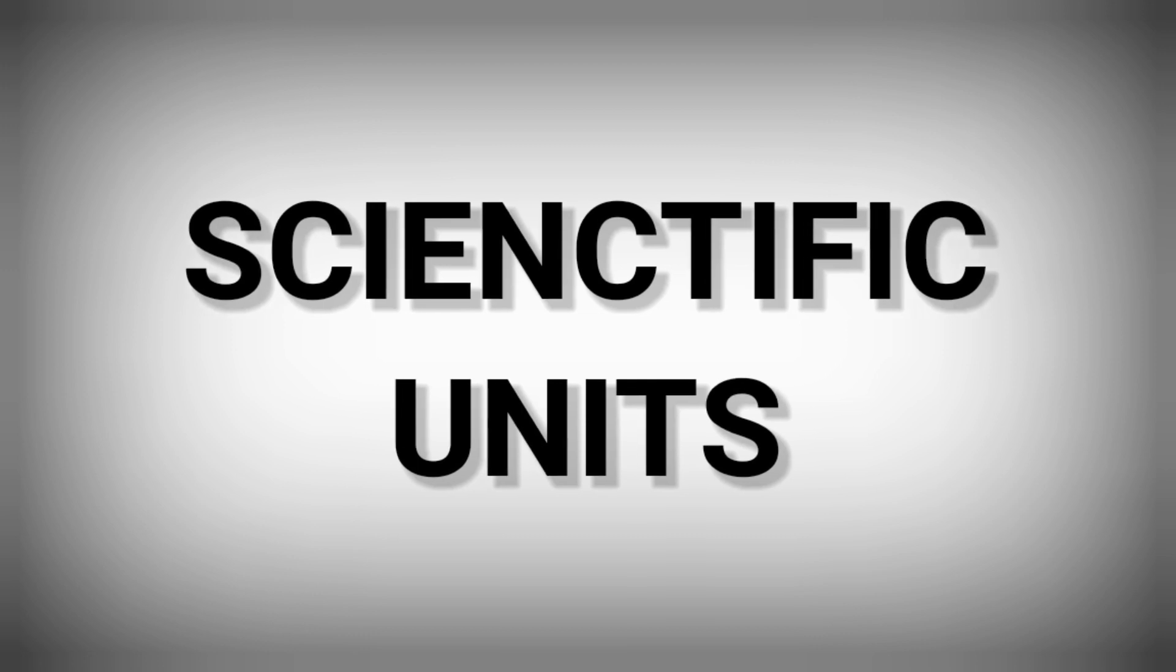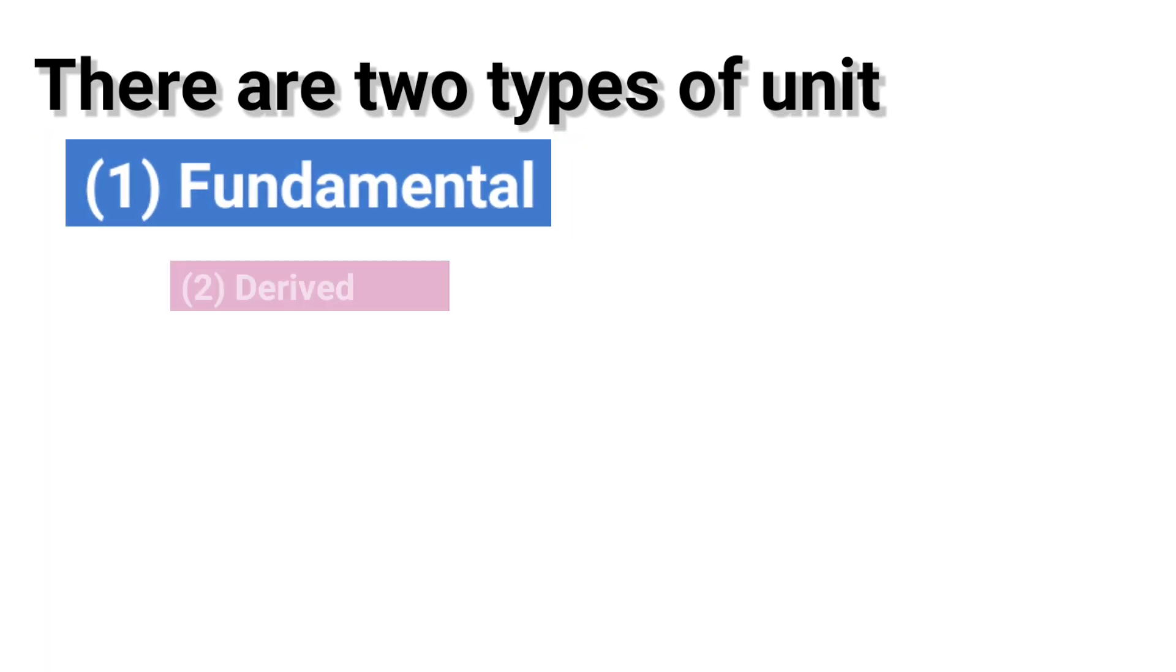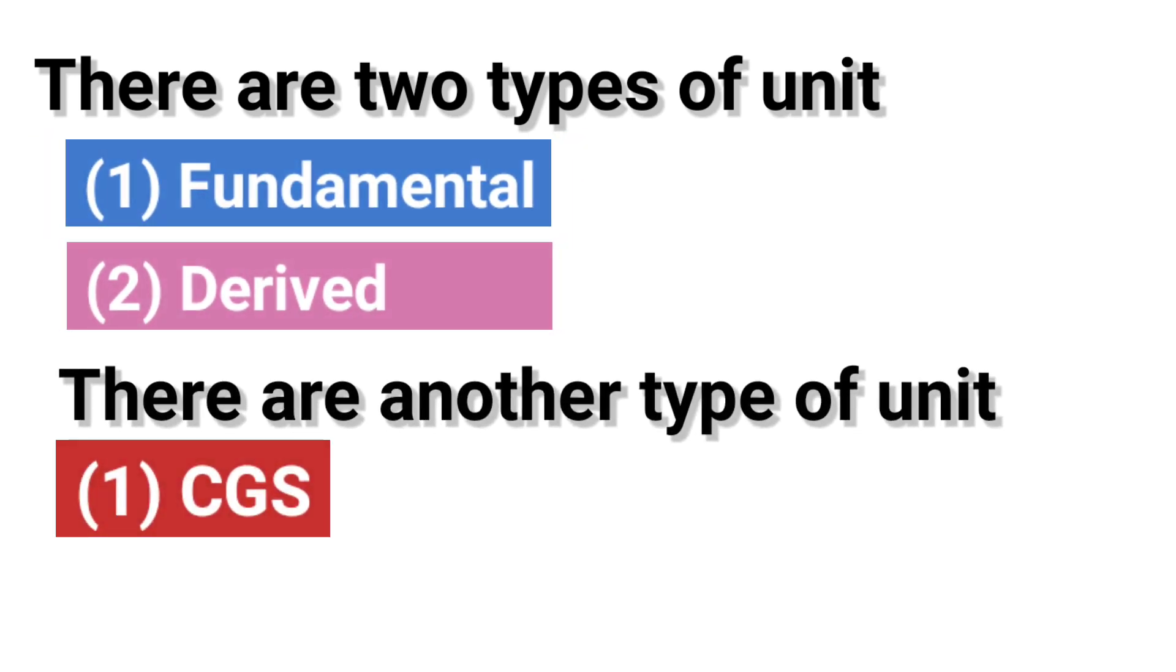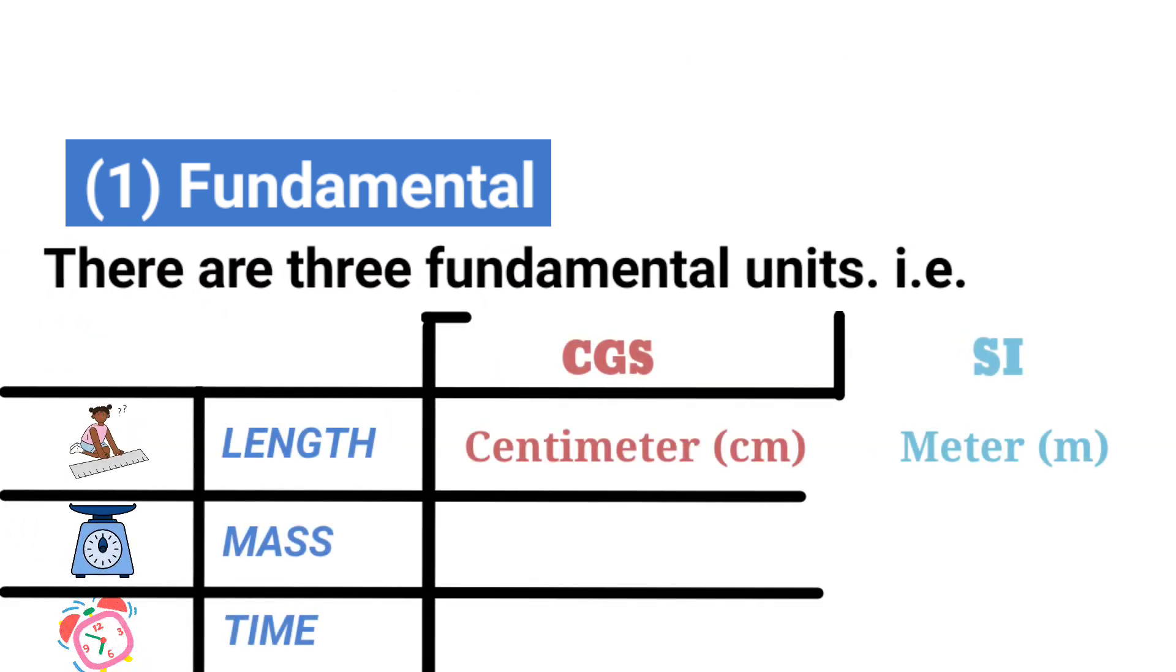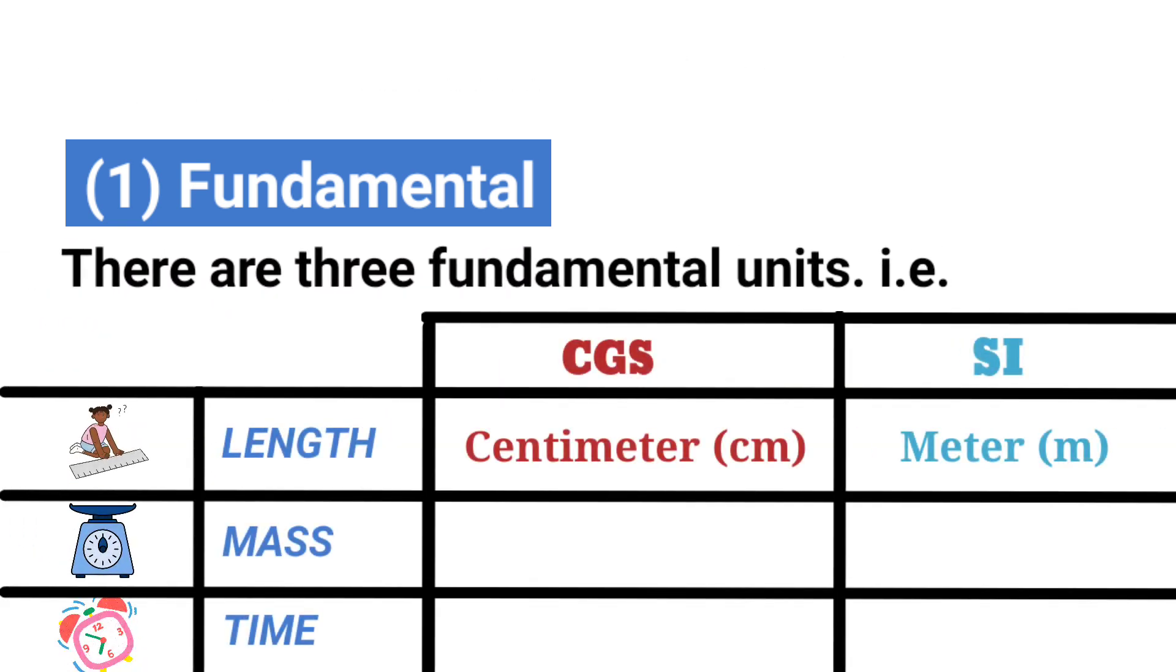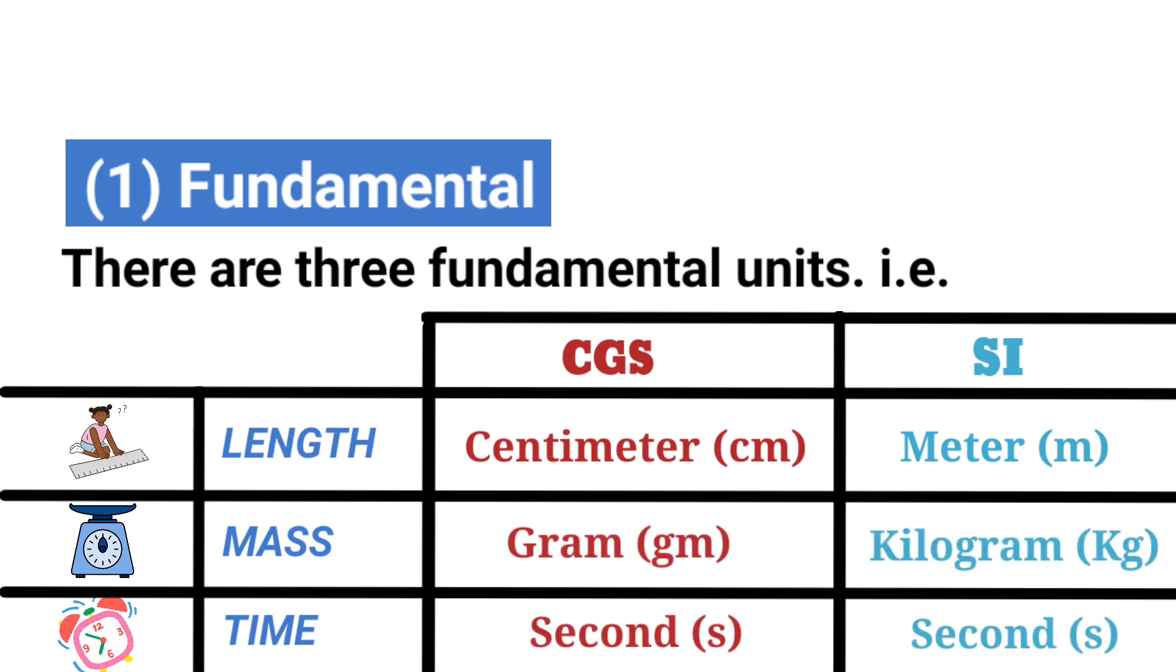Some important scientific units. There are two types of unit: one fundamental, two derived. And there are another type of unit: one CGS and two SI. There are three fundamental units, that is length. CGS unit is centimeter and SI unit is meter.